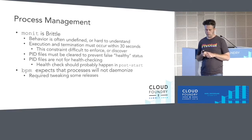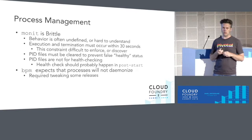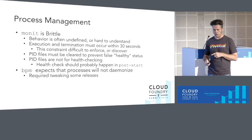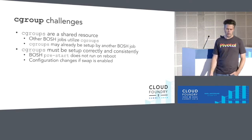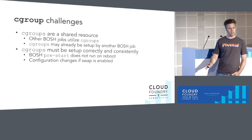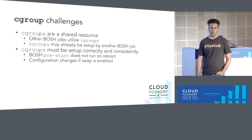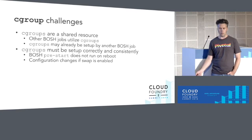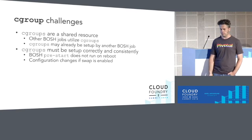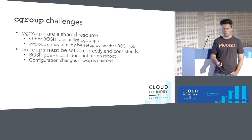Another hiccup with BPM is it expects processes will not daemonize. It expects logs to be written to standard out and standard error, which required some tweaks in a few releases. Some Cgroups things we ran into: we initially treated Cgroups as something BPM owned wholly, which was a bad assumption — in particular with Diego. They need access to a standard Cgroup setup in an expected location, consistently configured, being aware of swap on the VM. Also, pre-start doesn't run on reboot — another gotcha for people starting out with Bosch.